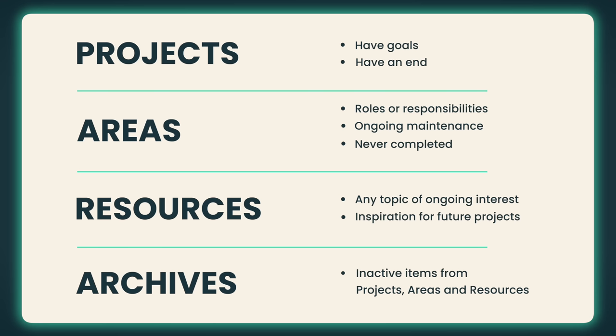In the previous two videos of this series, I introduced you to the four parts of PARA: projects, areas, resources, and archives. In the last video, we created our project list together and learned how to avoid making projects that are bad, unclear, or actually demotivating.